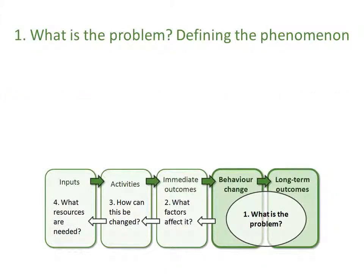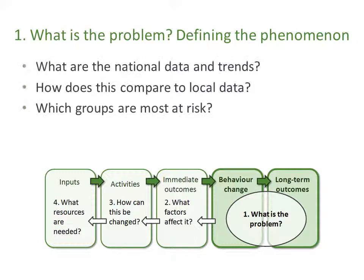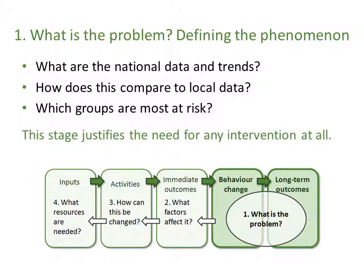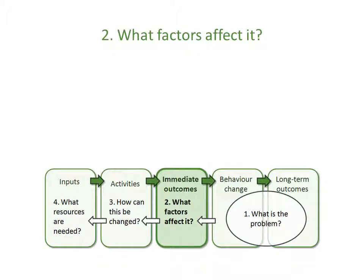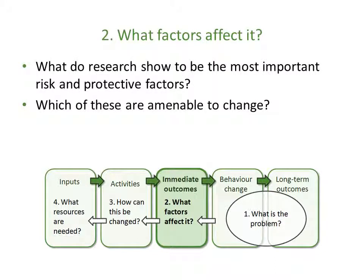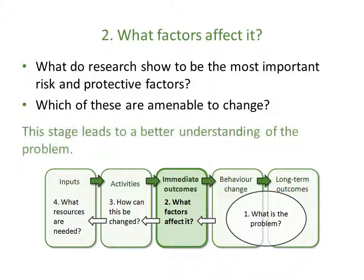Back to the first step: defining the phenomenon. You might ask what the national data and trends are, how this compares to local data, and which groups are most at risk. This stage justifies the need for any intervention at all. Then look at the research: what are the known risk and protective factors? Not all of these will be things you can change, of course. This stage leads to a better understanding of the problem.